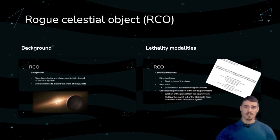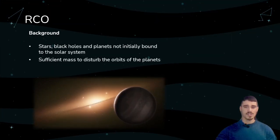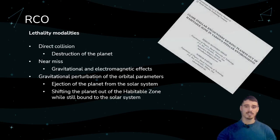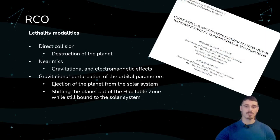Next on our list is the rogue celestial object. As an RCO, we define stars, black holes, and planets which are not initially bound to the receiving solar system. In order to be classified as RCOs, they need sufficient mass to disturb the orbits of the planets in the affected solar system. Encounters with RCOs can give four different outcomes: direct collision destroying all planets; a near-miss where gravitational and electromagnetic effects interfere with the local biosphere; gravitational perturbation causing ejection of the planet from the solar system; or a shift in orbit propelling the planet out of the habitable zone.